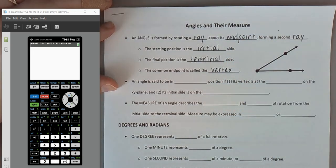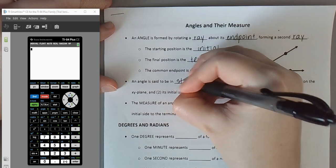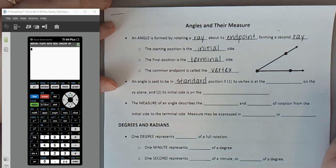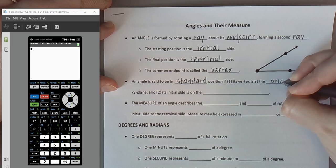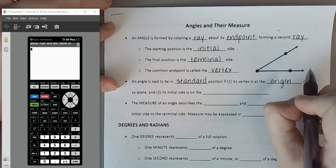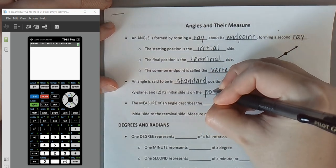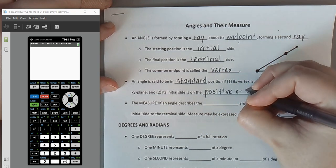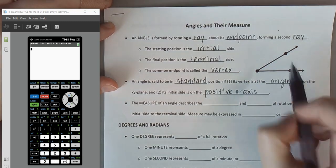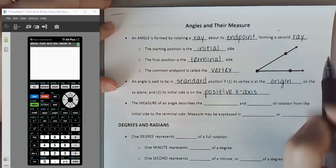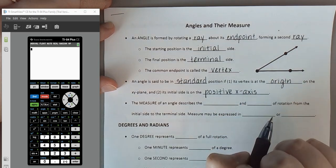Most of the angles we look at are going to be in standard position. An angle is in standard position as long as the vertex is placed at the origin in the x-y coordinate plane and the initial side is positioned along the positive x-axis. In other words, we're rotating counterclockwise starting from the positive x-axis with our vertex on the origin.